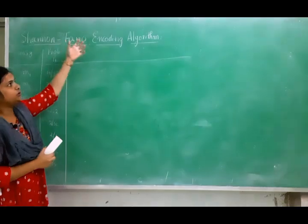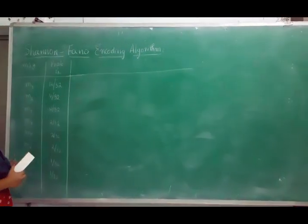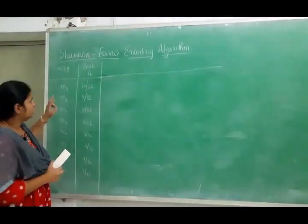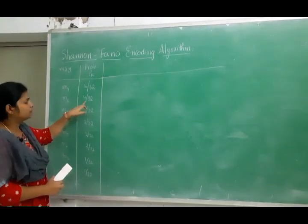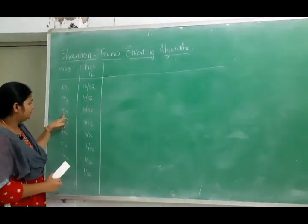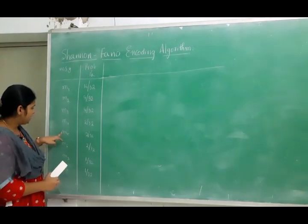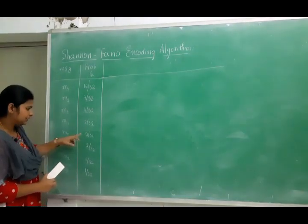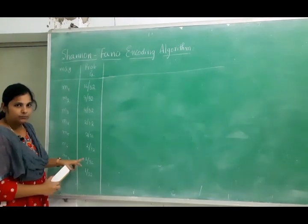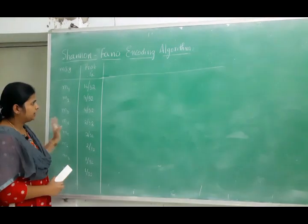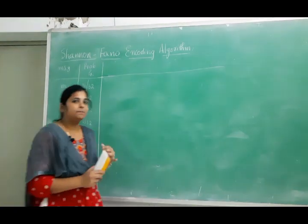For the Shannon-Fano encoding algorithm example, I have taken eight messages with their probabilities: m1 with probability 16/32, m2 with 4/32, m3 with 4/32, m4 with 2/32, m5 and m6 with 2/32 each, and m7 and m8 with 1/32 each. In order to code this data, we will follow five steps.